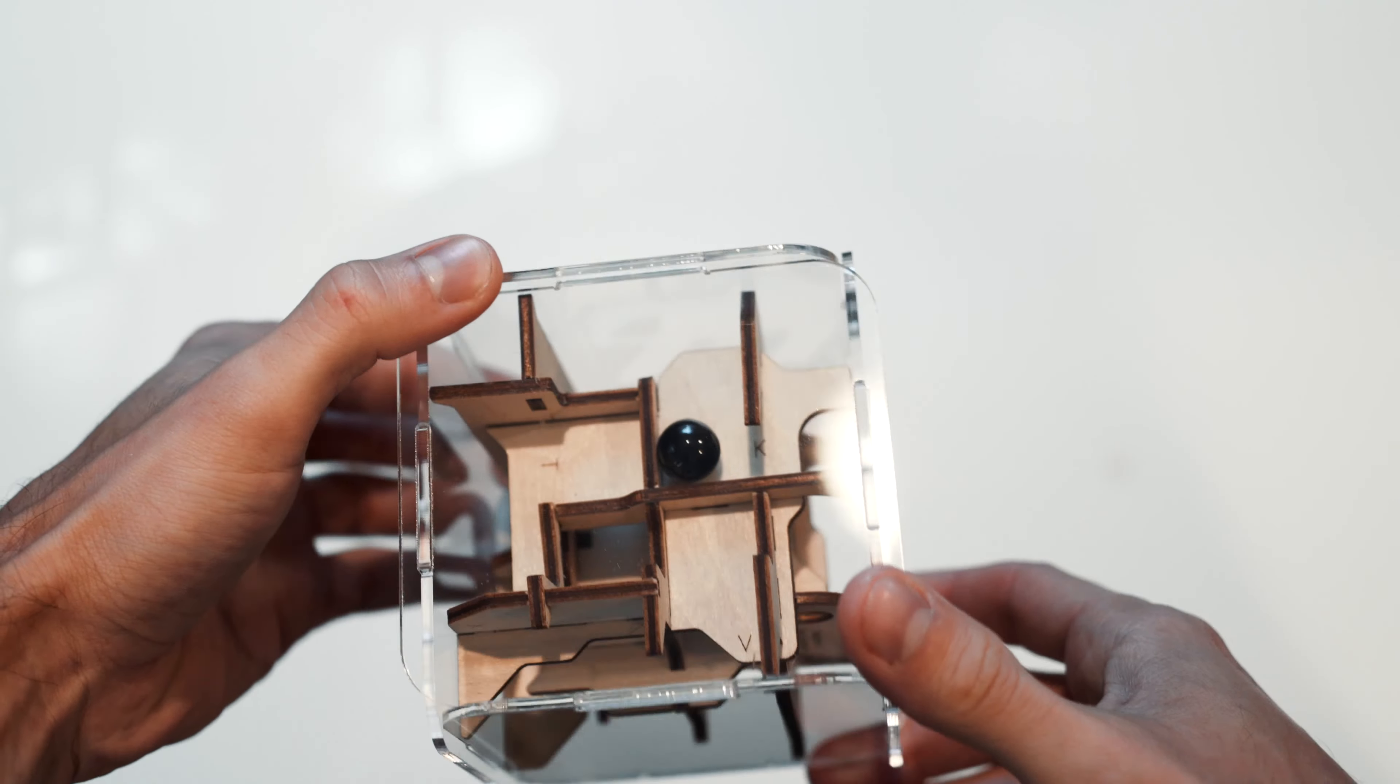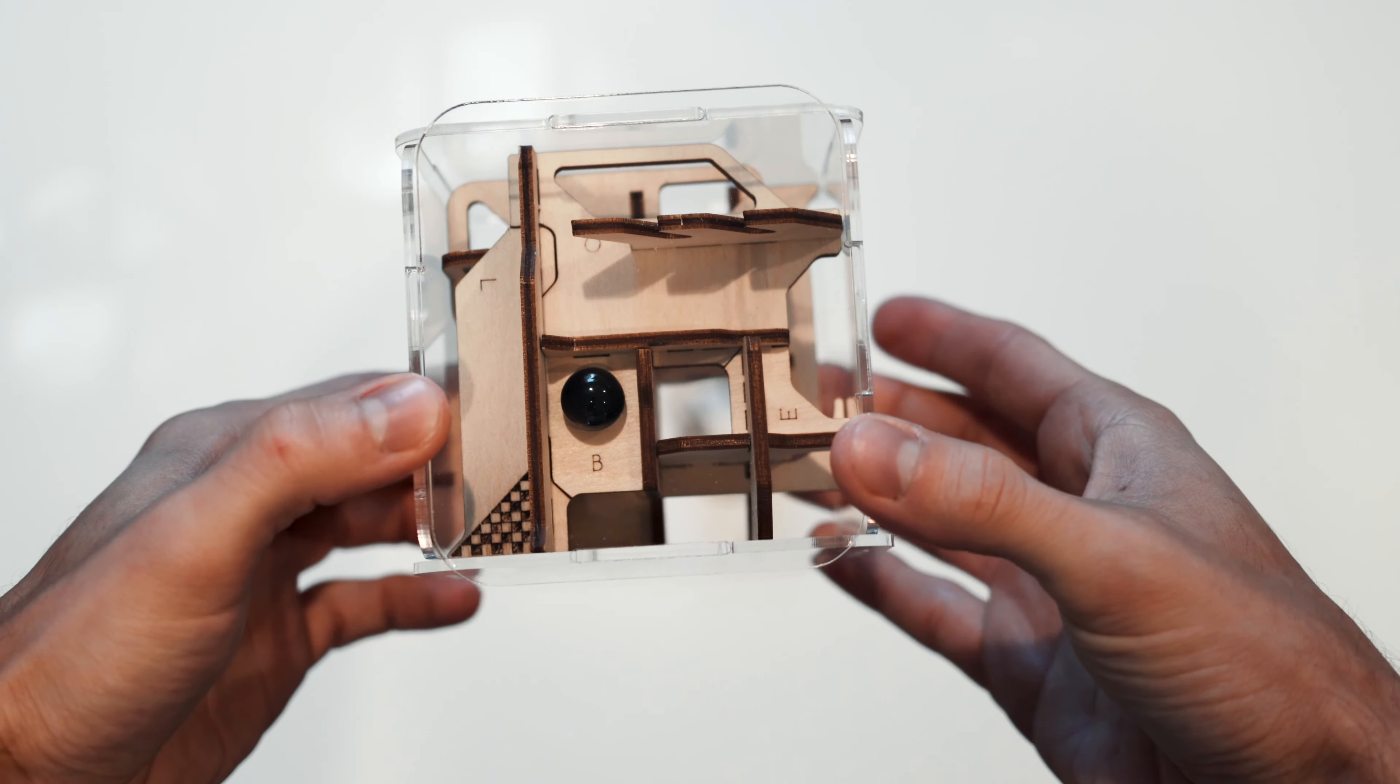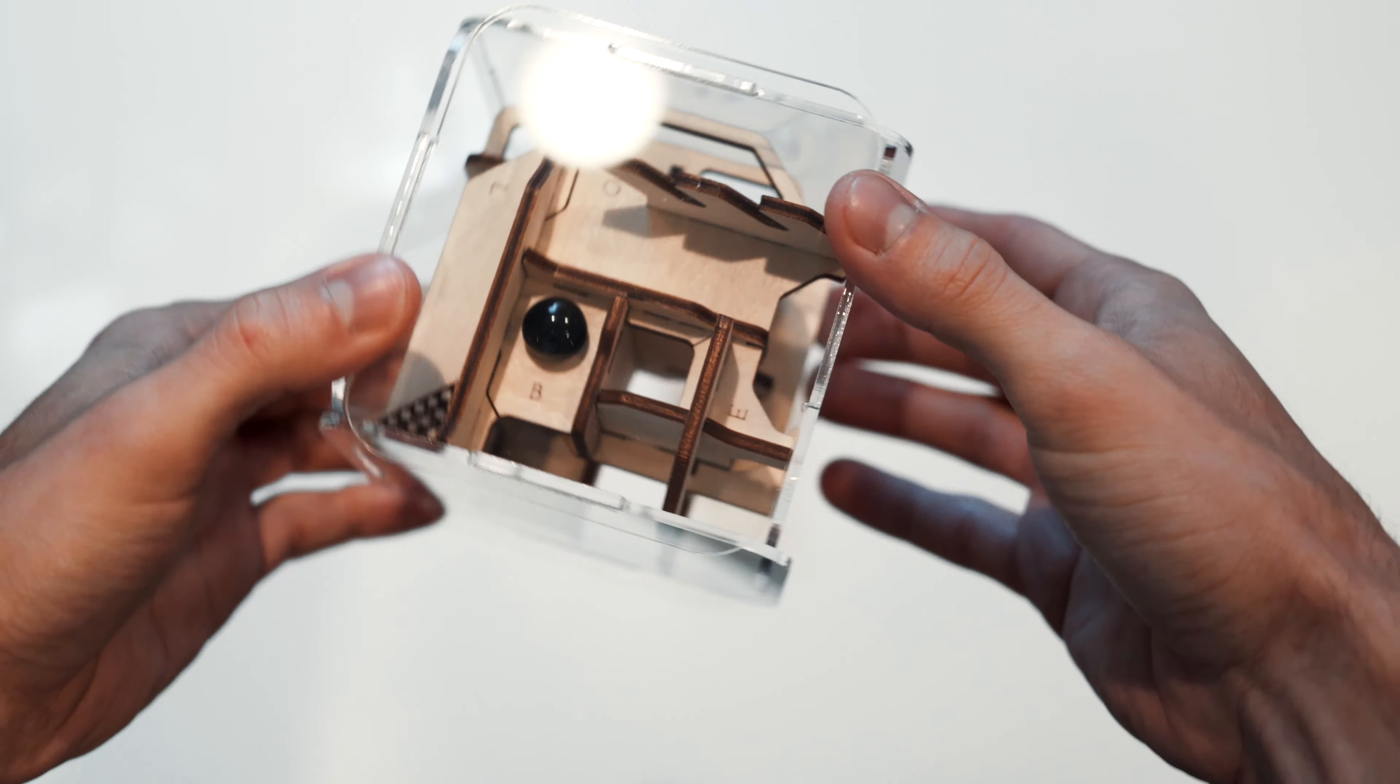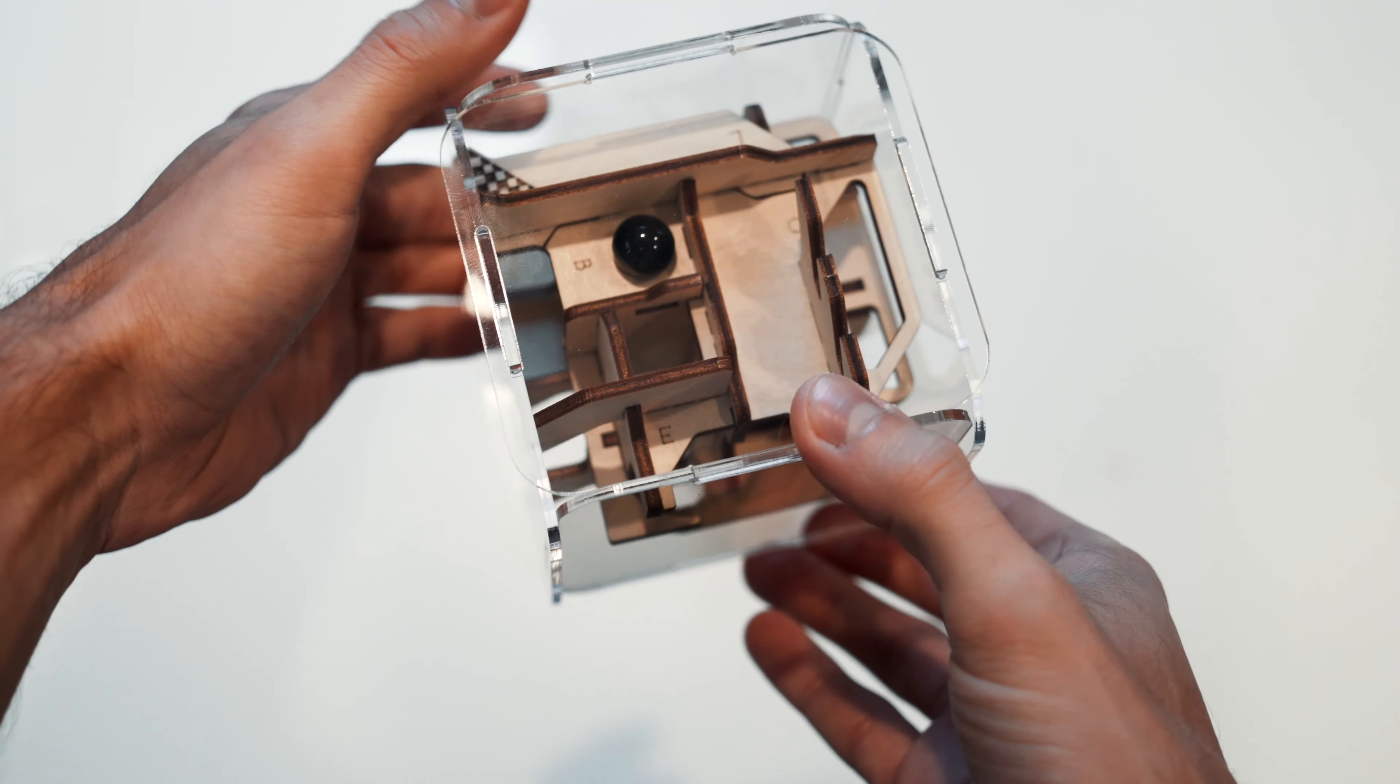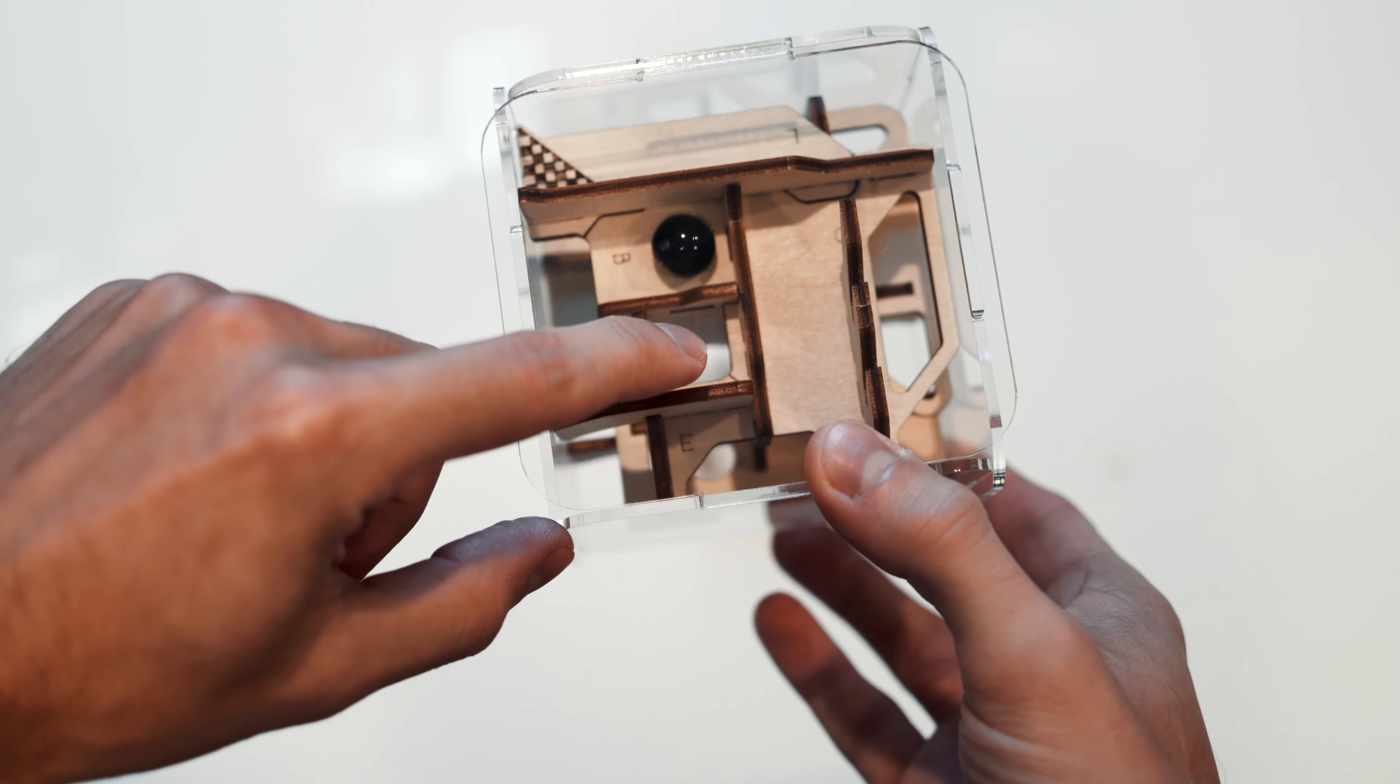From here we're going to go up here to this spot by the letter B. And then here's a tricky move. You need to get the marble from where it is now into this tunnel.